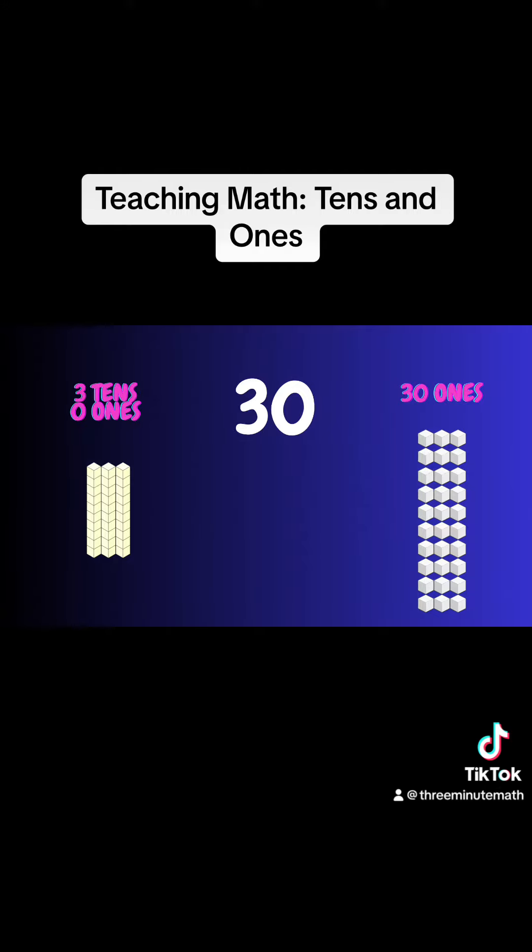Thirty is three tens and zero ones or thirty ones. Forty is four tens and zero ones or forty ones. Fifty is five tens and zero ones or fifty ones.